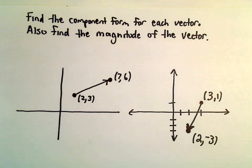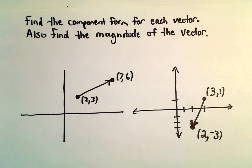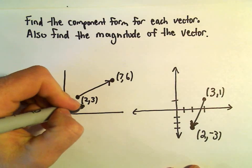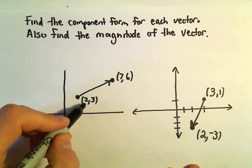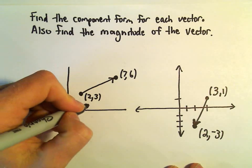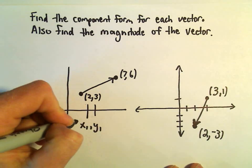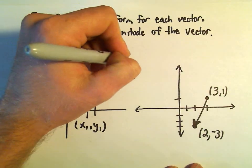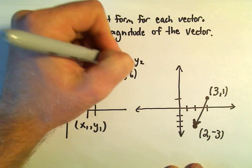So just a couple basic questions here. We're going to find the component form and the magnitude of each of these two vectors. My starting point for this one is 2 comma 3, it terminates at 7 comma 6. So this will be my x1 and my y1, the 2 and the 3, these will be my x2 and my y2.